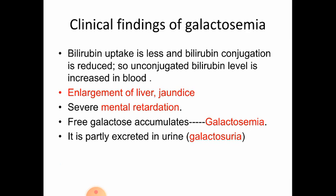Other clinical findings of galactosemia include reduced bilirubin uptake and reduced bilirubin conjugation, leading to elevated unconjugated bilirubin in the blood, causing jaundice. There is also enlargement of the liver, severe mental retardation, and free galactose accumulation. Since galactose accumulates, it is partially excreted in urine, leading to galactosuria.